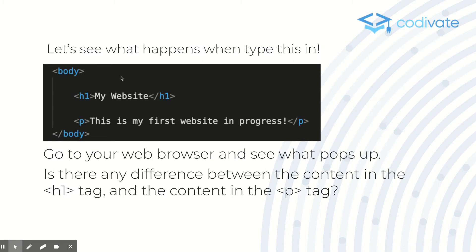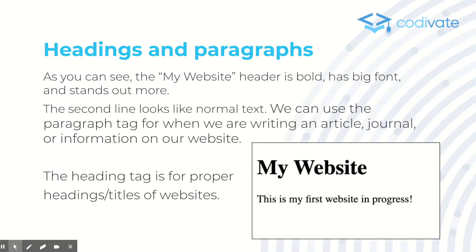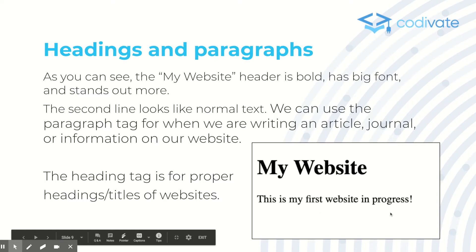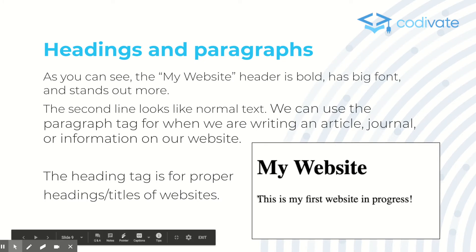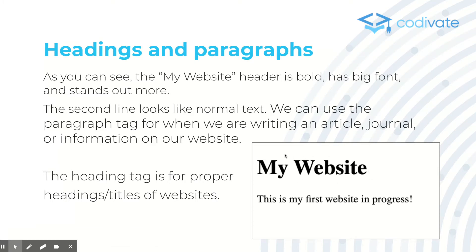Go ahead, pause the video and type in the H1 tag with 'My Website' inside, and the P tag with 'This is my first website in progress.' Look at the output — the 'My Website' header is bold, has a big font, and stands out a lot more, while the second line looks like normal text. We use the paragraph tag to write articles, journals, or any information on our website. The heading tag is for proper headings or titles.